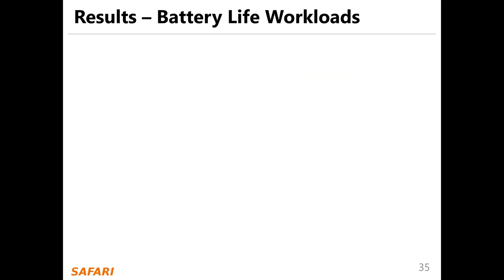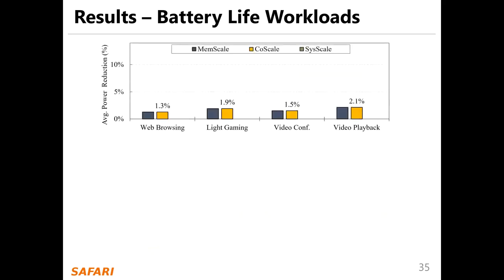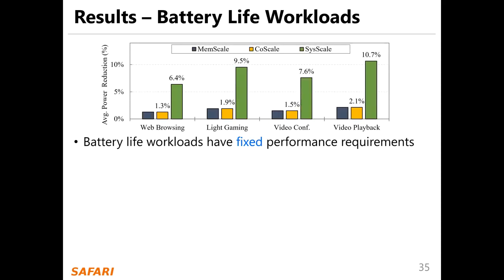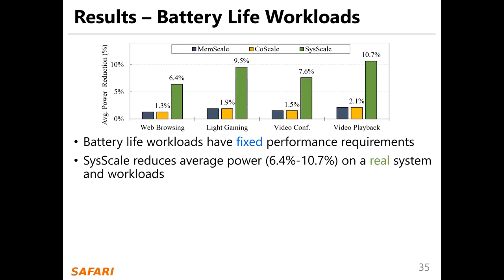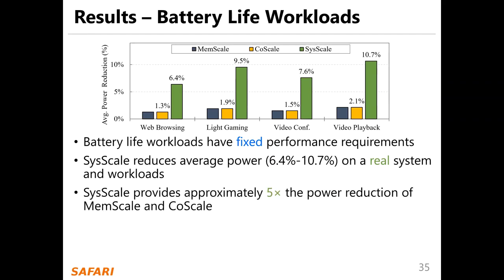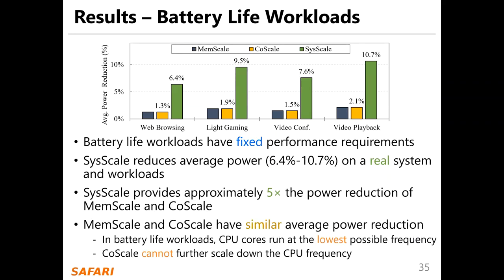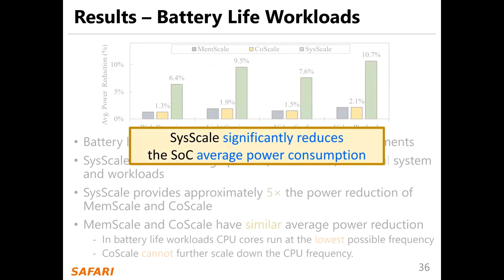Now presenting the results for the battery life workloads. Battery life workloads normally have fixed performance requirements. C-Scale reduces the average power between 6.4% and 10.7% on real system workloads, providing approximately five times the power reduction of MemScale and CoreScale. MemScale and CoreScale have similar average power reduction because in battery life workloads, CPU cores run at the lowest possible frequency, so CoreScale cannot further scale down the CPU frequency. We conclude that C-Scale significantly reduces the SoC average power consumption.